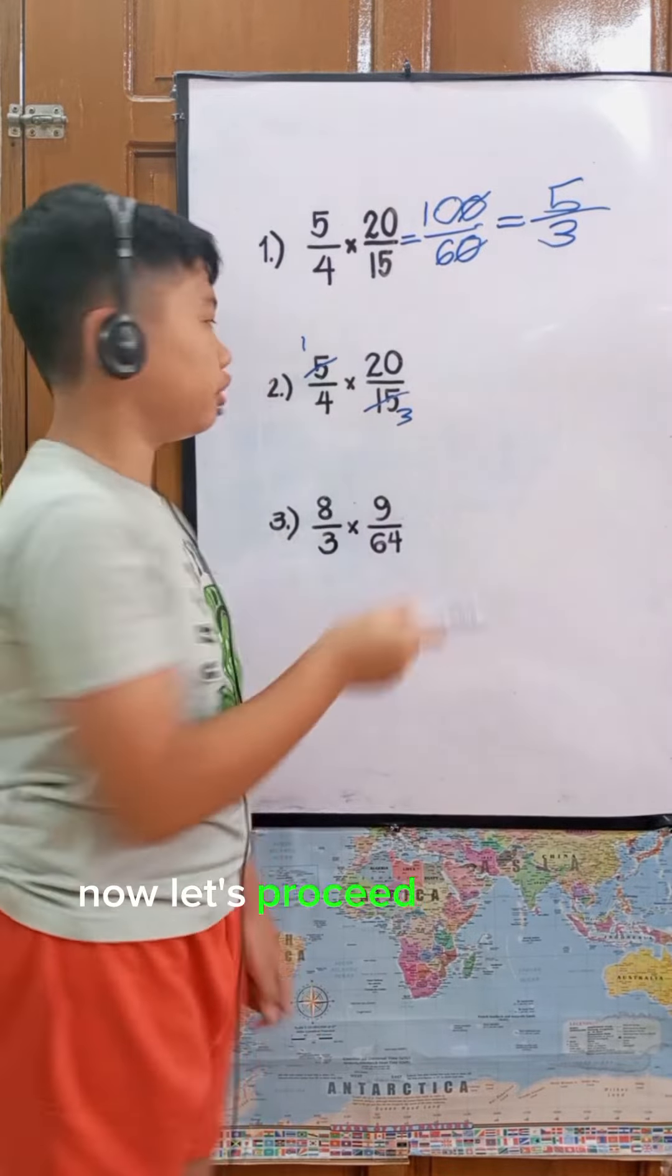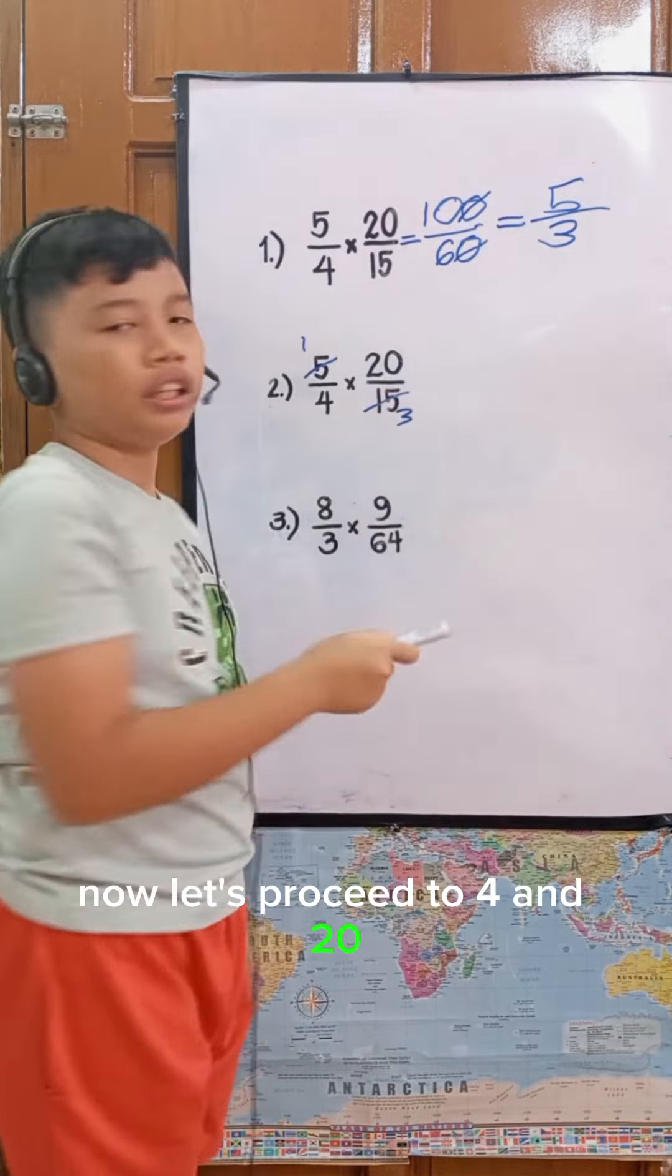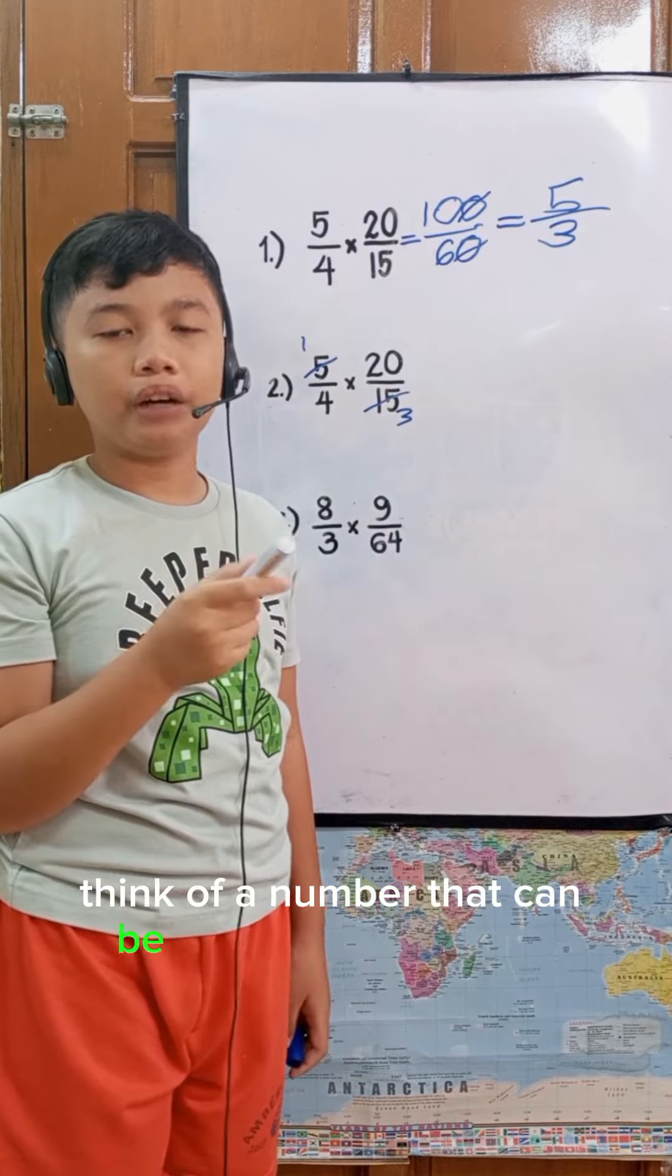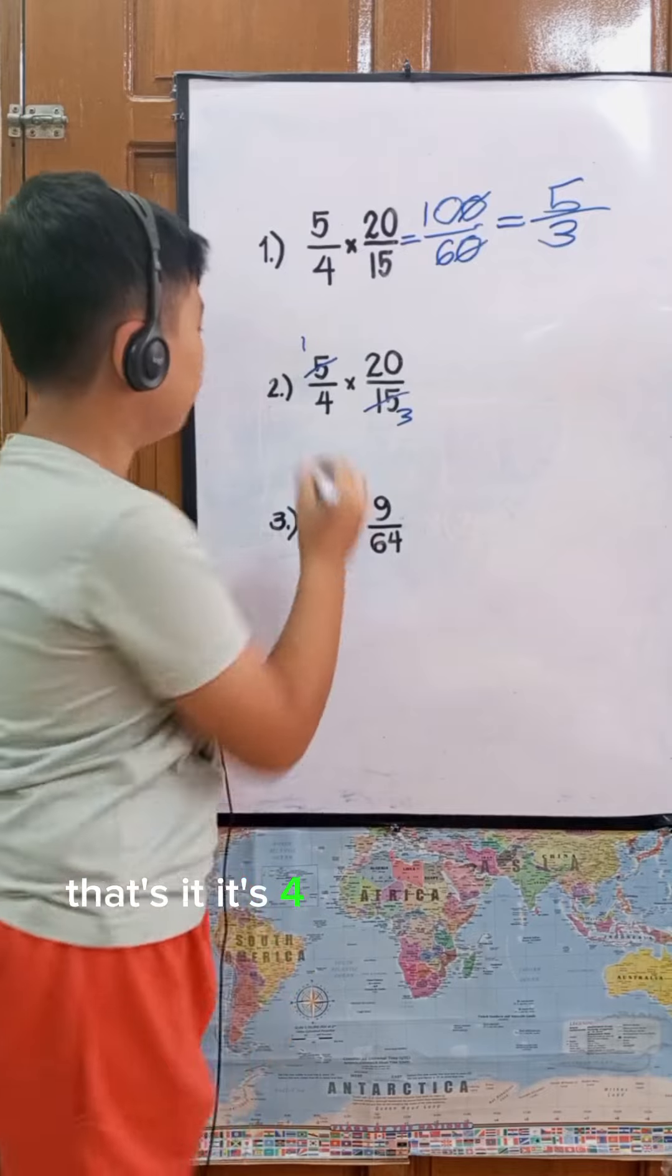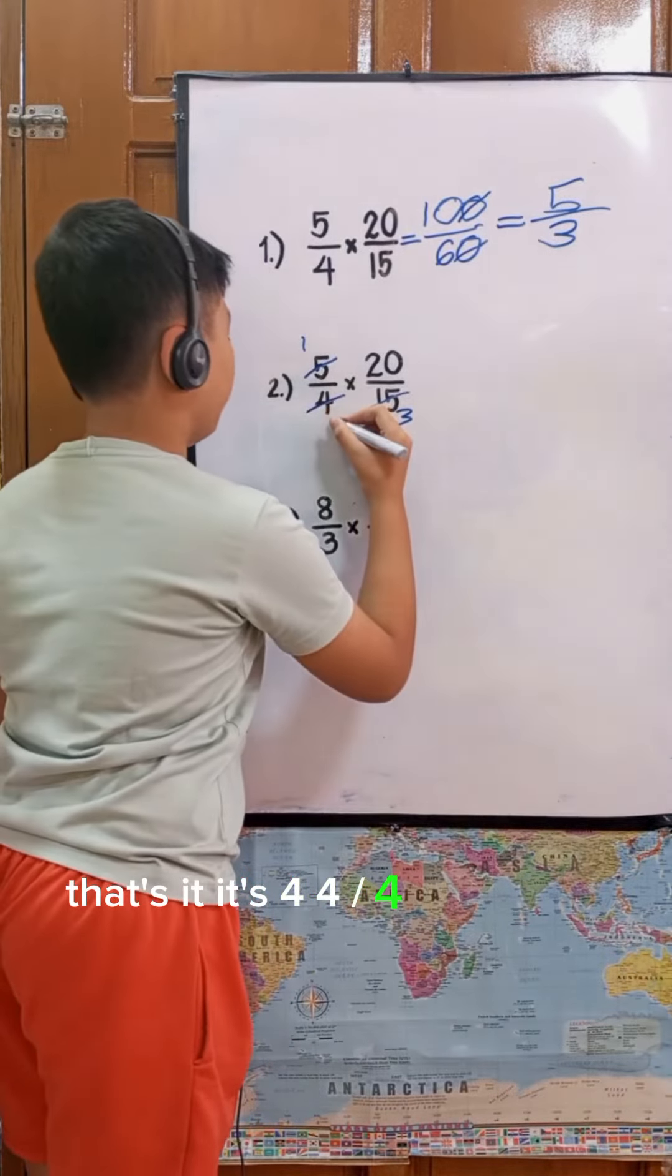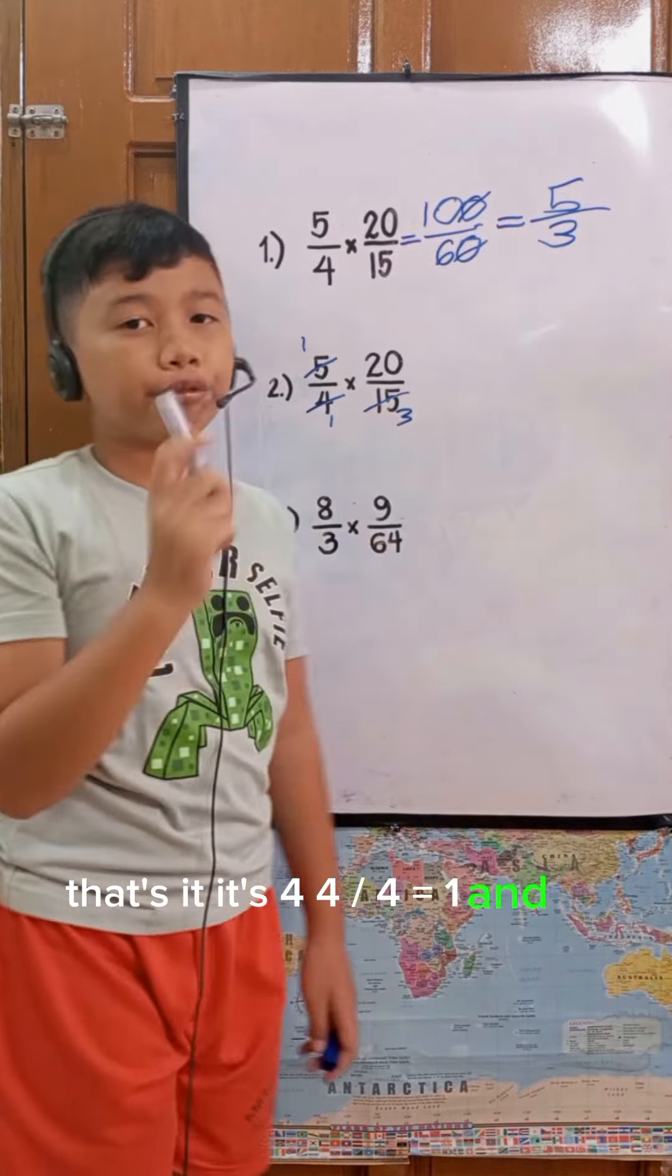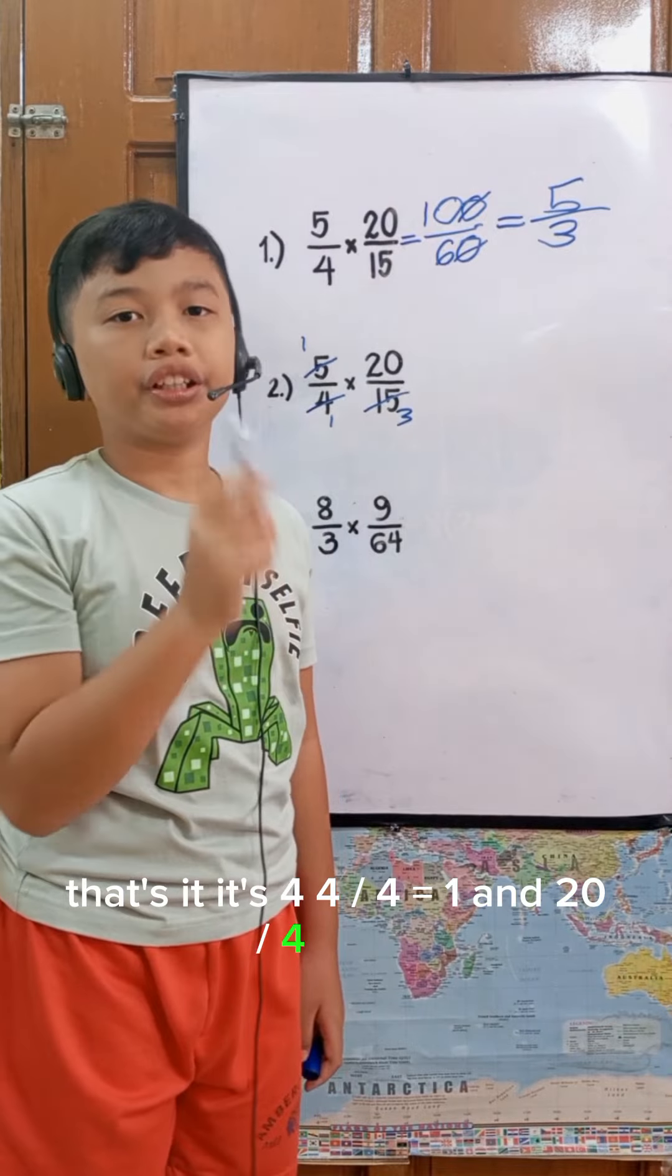Now let's proceed to 4 and 20. Think of a number that can be divided by 4 and 20. That's it, it's 4. So 4 divided by 4 equals 1, and 20 divided by 4 is 5.